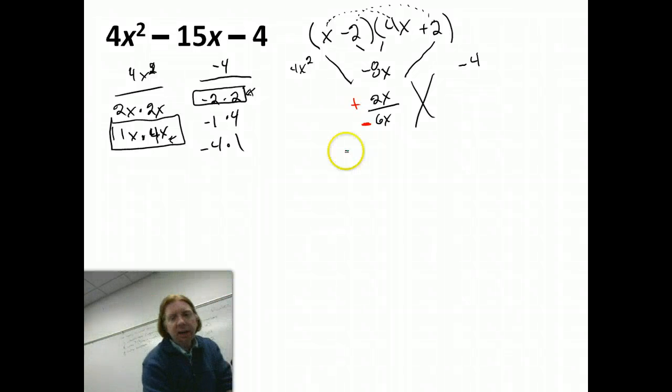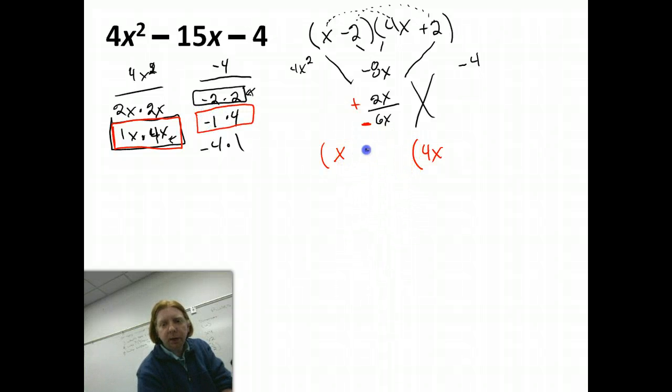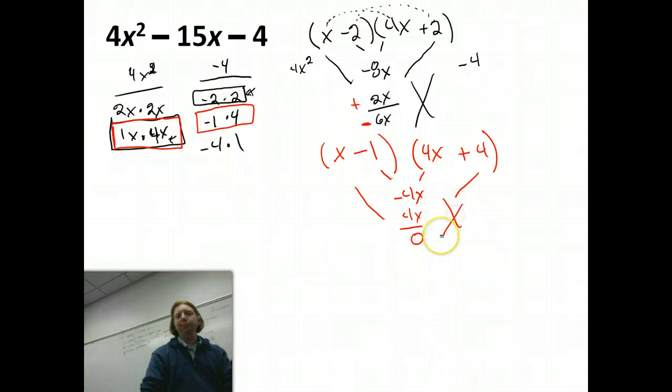And this is where you kind of start to look at what you've got and try to set yourself up for some success. Let's stay with the 1 and the 4. So let's do x and 4x. And then let's do 1s and 4s now and see if that works. So let's do minus 1 and plus 4. That might work. Now when I do out the firsts and the lasts, I still get my 4x squared and my negative 4. I'm just going to go straight ahead and test the inners, negative 4x, and the outers, 4x. I get 0. All right, well, that didn't work.